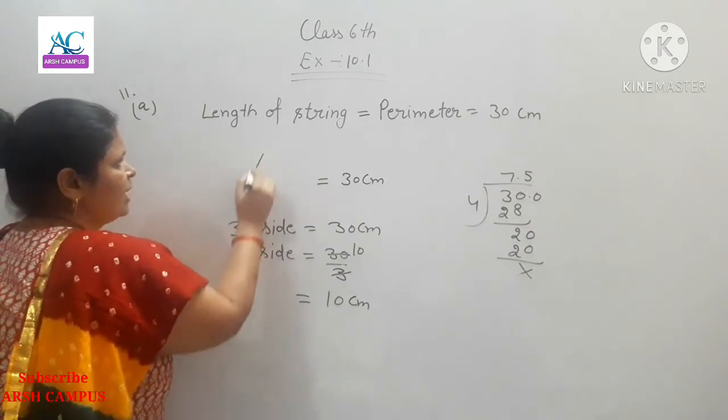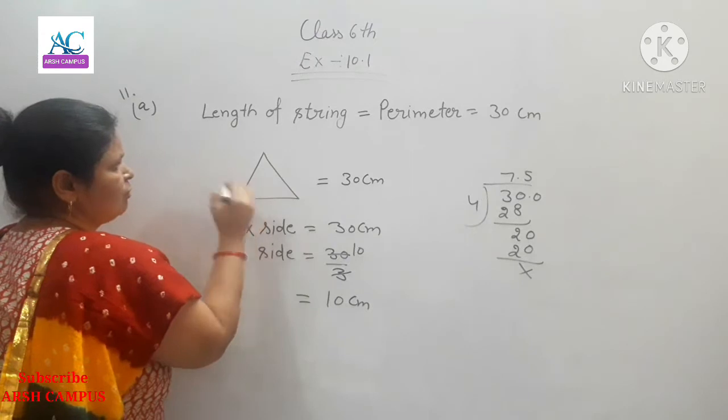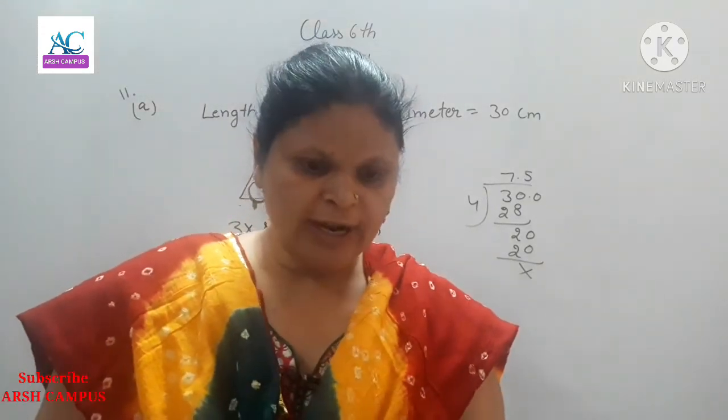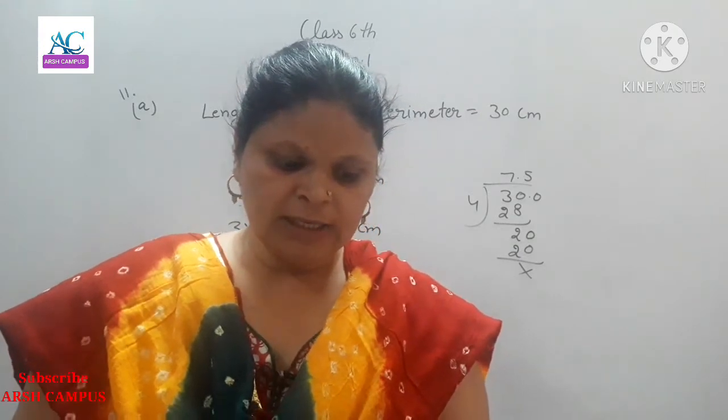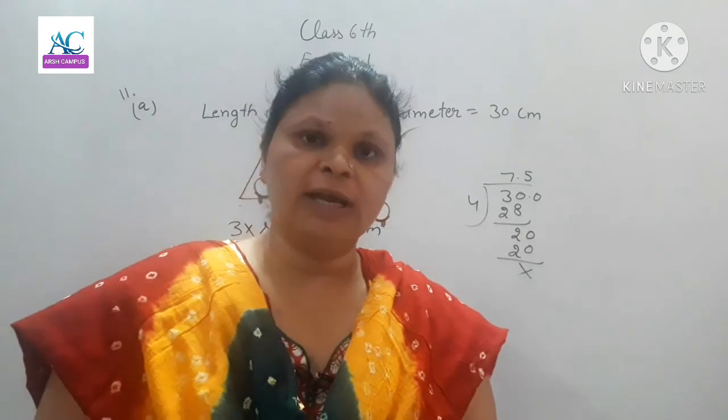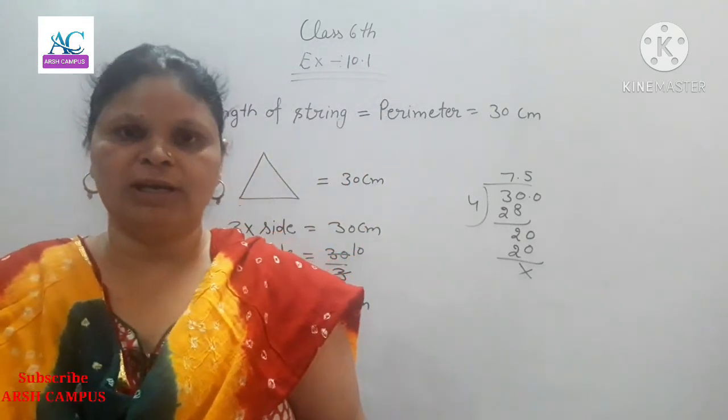Now, part C is a regular hexagon. A hexagon has six sides, and all six sides are equal.